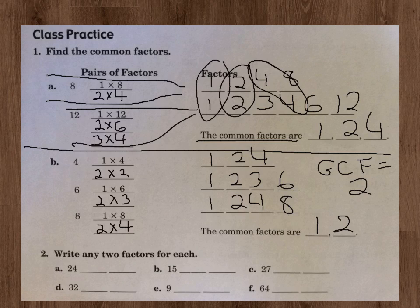Down below in number 2, it says write any 2 factors for each. Well, 2 factors for 24, first one that comes in my head, and you can use this if you want, would be 2 and 12. They both go into 24. There's other ones, you could put 4 and 6. I don't want you to put 1 in anything. That would be too easy, like 1 and 15. Don't do 1 in anything. Think of some other ones. 15, you could do 3 and 5. 27, I'll let you figure out the rest of those on your own.